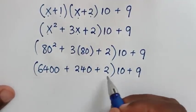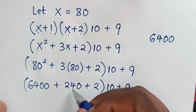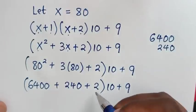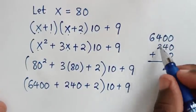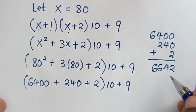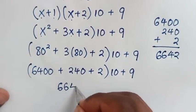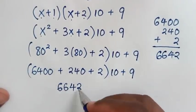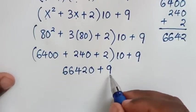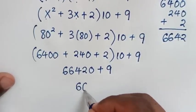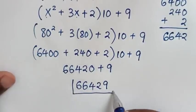Then we'll add: 64 with double zeros, then plus 8 times 3 is 24, then 0, then plus 2, bracket times 10 plus 9. So 6400 plus 240 plus 2 gives 6642. Then times 10, we add a zero, then plus 9, so this plus this gives 9 plus 0 is 9. So here it will be 64,209 — this is our final answer.